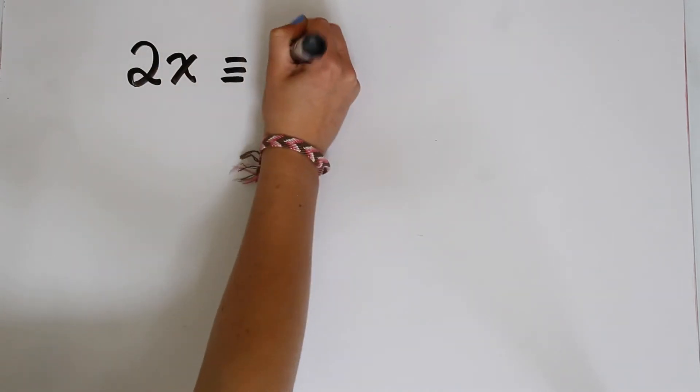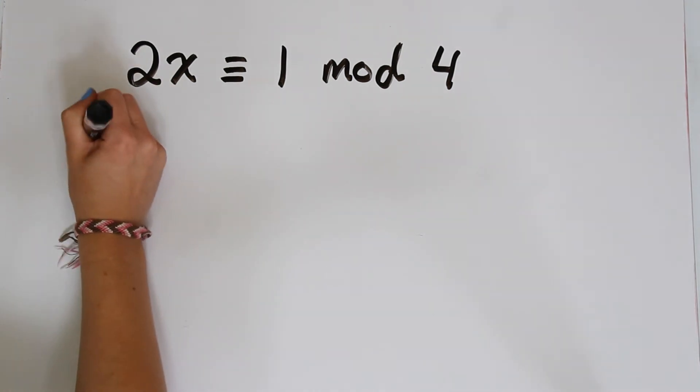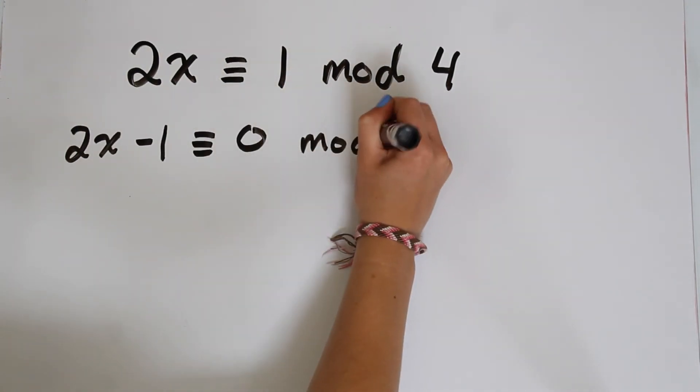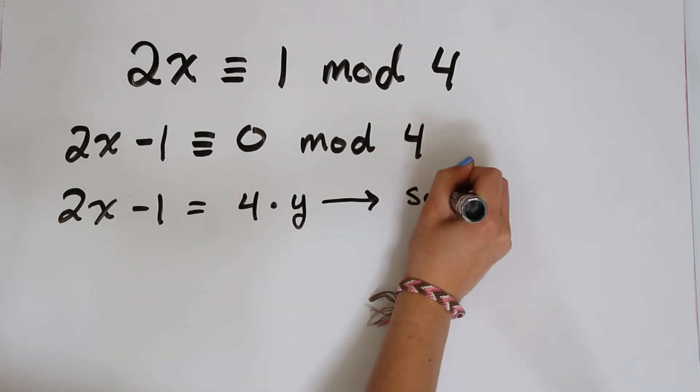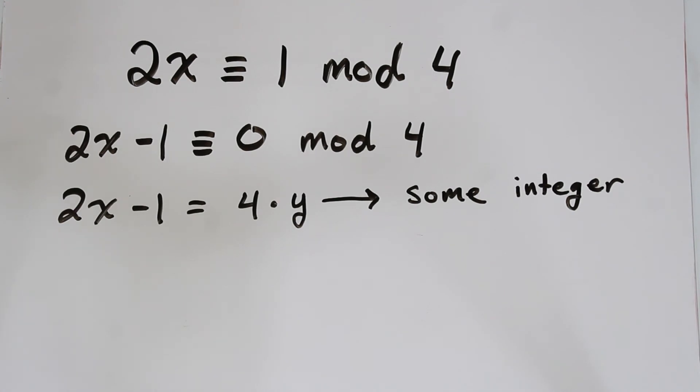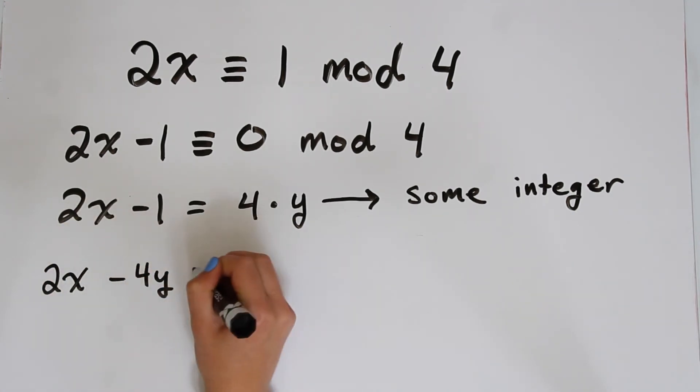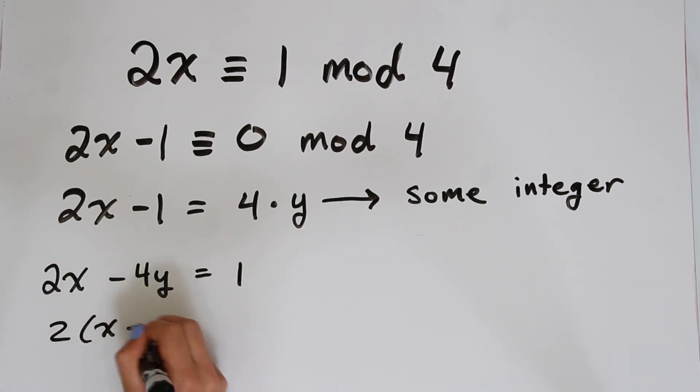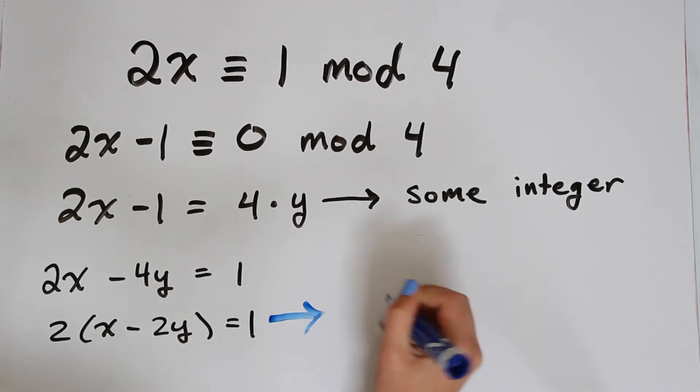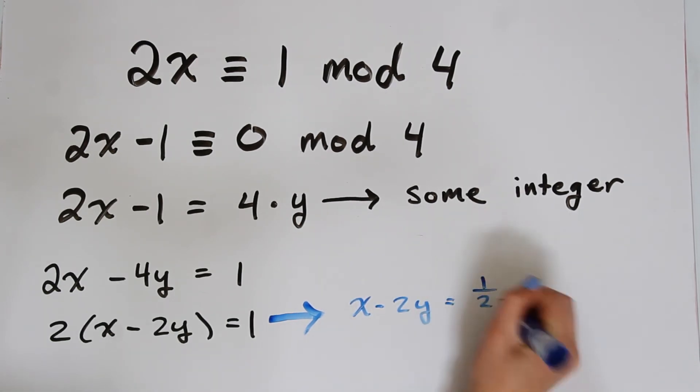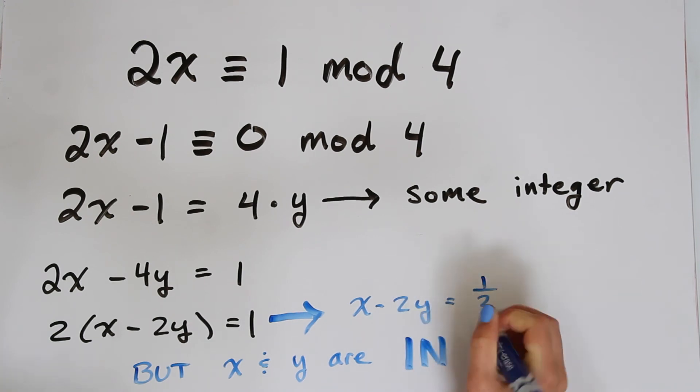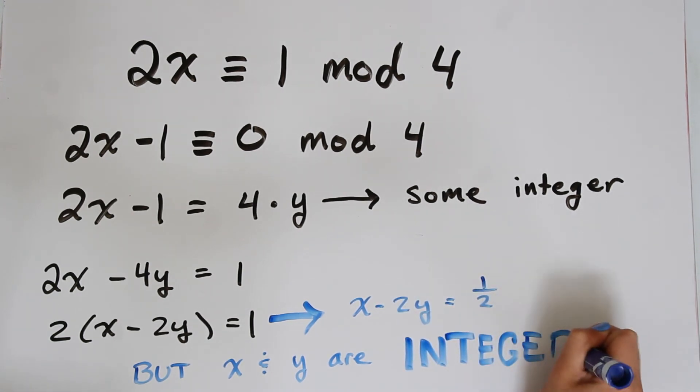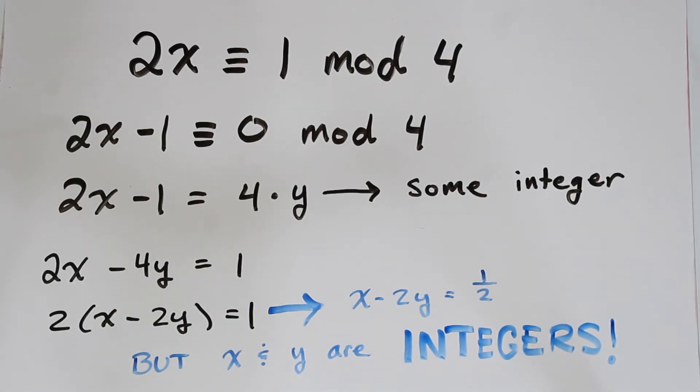And maybe a better explanation for why this congruence has no solutions for you is that from last time, we know that 2x minus 1 is congruent to 0, because 2x minus 1 must be divisible by 4. So therefore, in normal arithmetic land, 2x minus 1 equals 4y for some integer y. Doing some algebra, we can see that then 2x minus 4y equals 1. And therefore, 2 times x minus 2y equals 1. And this implies that x minus 2y equals 1 half. Well, this is impossible, because we assumed that x and y were integers at the beginning. So if you take a linear combination of any integers, you can't get a fraction. So therefore, no x satisfies this congruence.